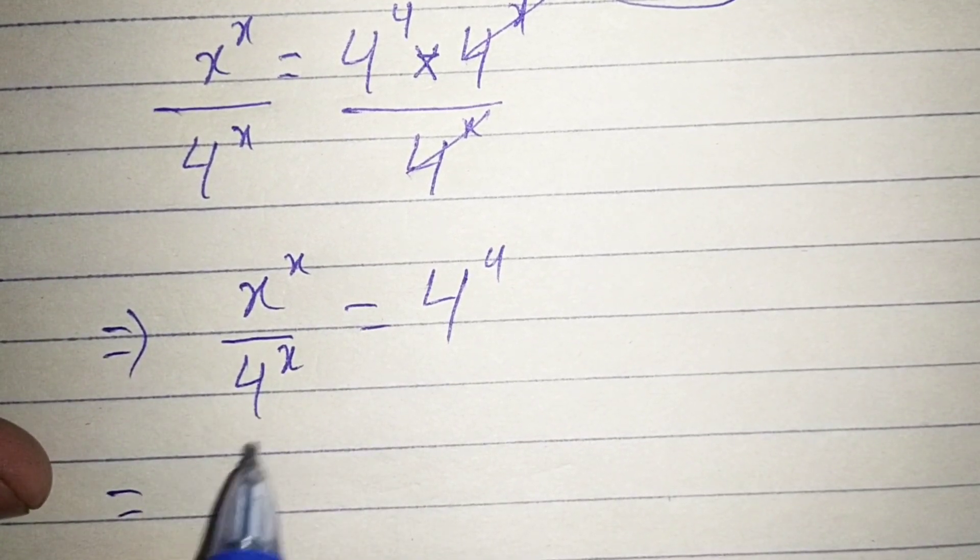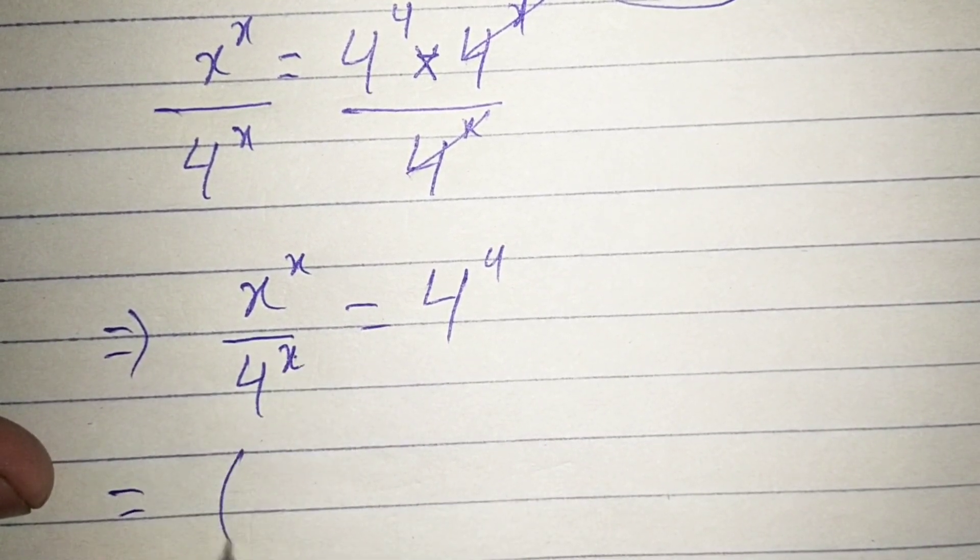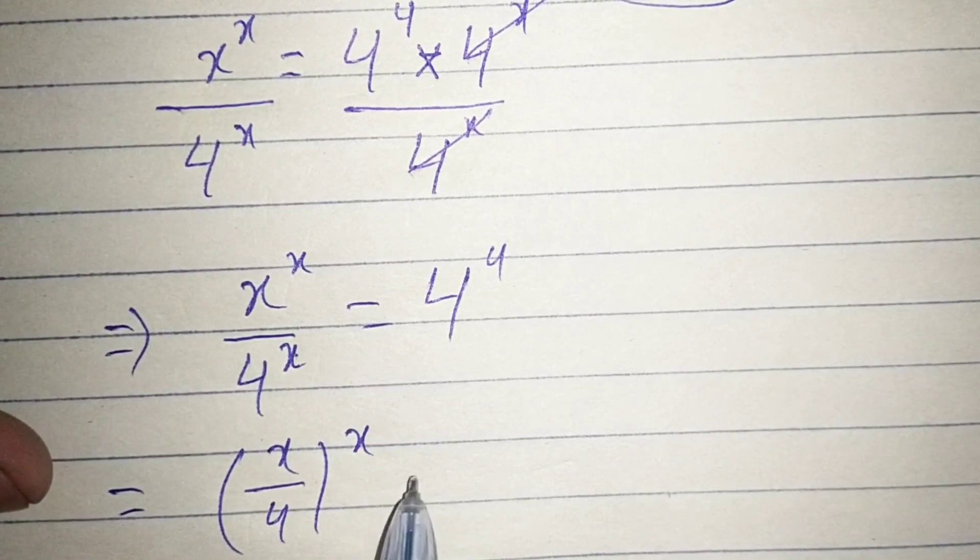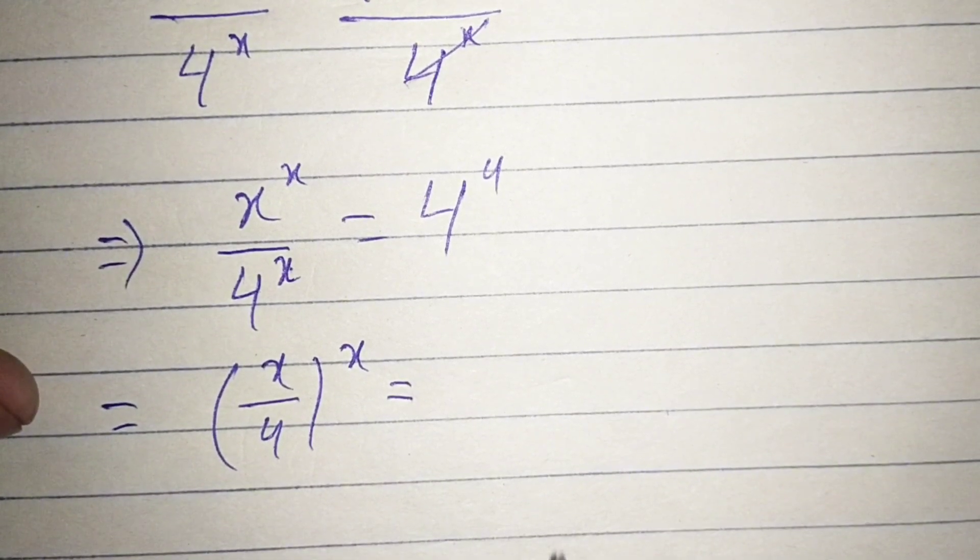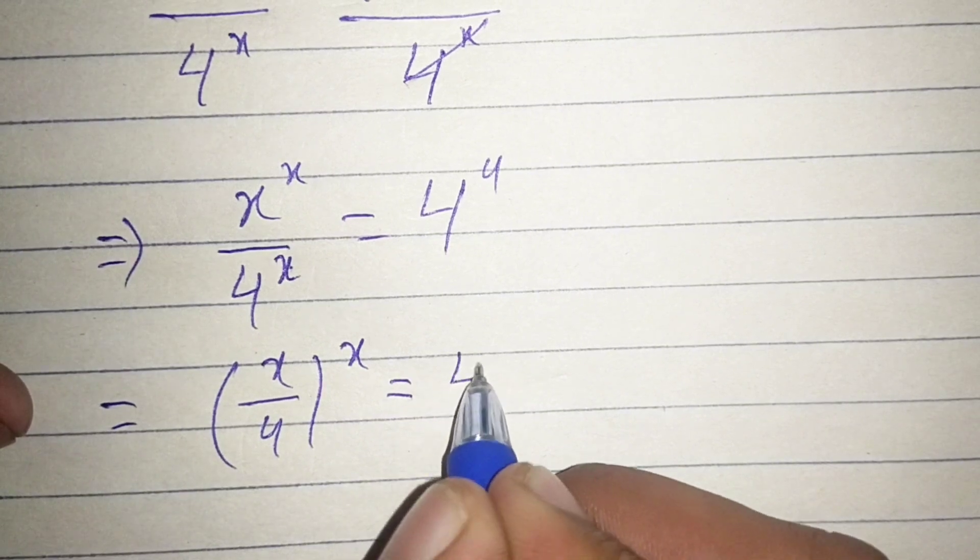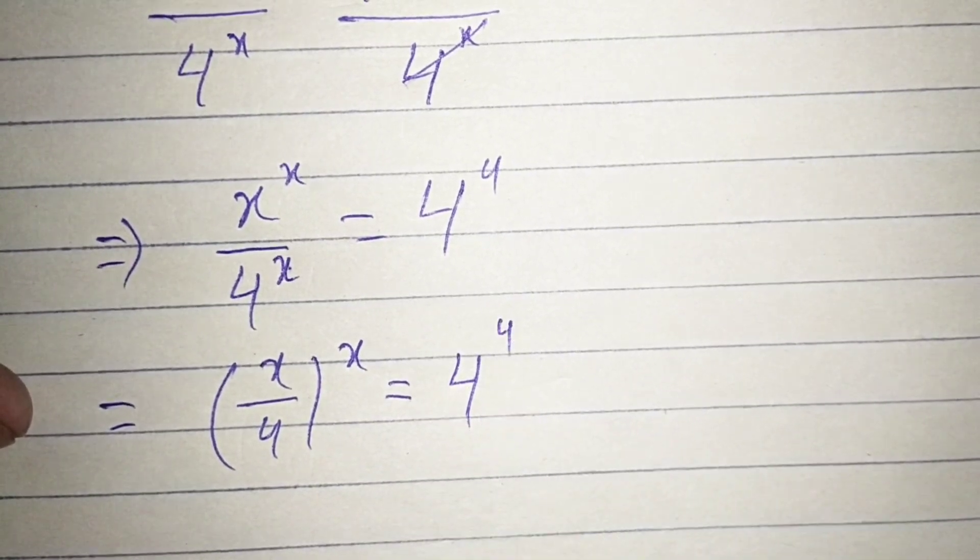Now take this power common, so we have x divided by 4 to the power x equals 4 to the power 4.